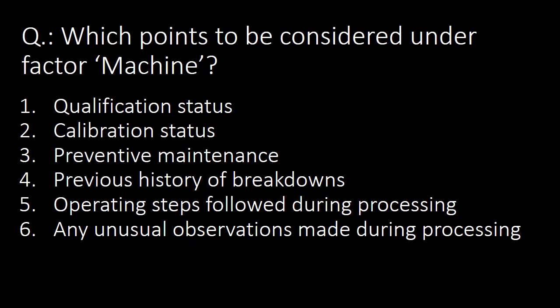Next question: which points should be considered under factor machine? Under factor machine, we should consider the following for the particular equipment or instrument: equipment qualification status, calibration status, preventive maintenance status, previous history of breakdowns or malfunctioning, operating steps followed during processing, and whether any unusual observation was made during processing.